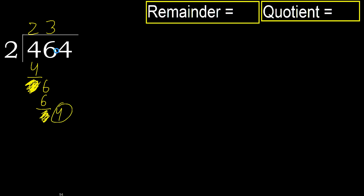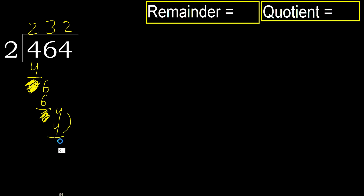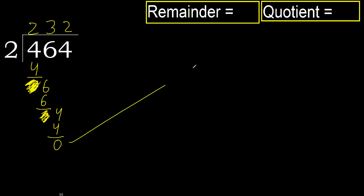OK, 4: 2 multiplied by 2 is 4, is not greater. OK, subtract. Next. There is no number, therefore finish it.